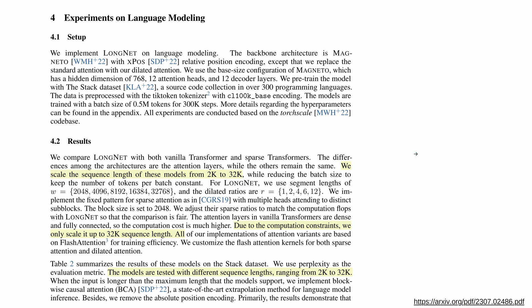Now comes the part where Microsoft amazed me, because I saw the one billion token claim. Imagine evaluating this system with one billion tokens in your input sequence — this must be really expensive. I know Microsoft has hundreds of thousands of GPUs, but even for a supercomputer center. And then I read: 'by the way, we scale the sequence length of this model from 2k to 32k.' They claim a billion and they verify on 2k to 32k. I mean, Claude has 100k already. And then they say 'due to computation constraints' — Microsoft Research says they have computation constraints — we only scale it up to 32k sequence length.